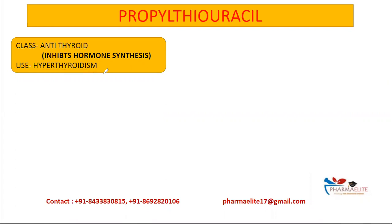Hyper means excessive and thyroidism refers to the thyroid hormone, so hyperthyroidism is basically hyperactive or hyper secretion of thyroid hormones from the thyroid gland. Two important terms to remember are Graves disease and toxic nodular goiter, both types of hyperthyroidism. Graves disease is an autoimmune disease, and toxic nodular goiter is caused by excessive secretion of thyroid hormone independent of TSH.